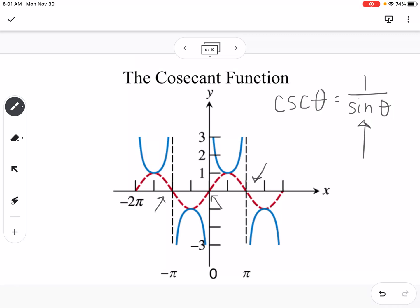So that means our asymptotes would be at x equals negative pi, 0 pi, pi, 2 pi, and so on.